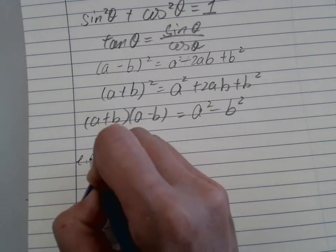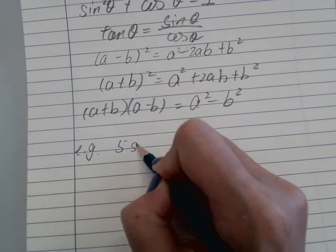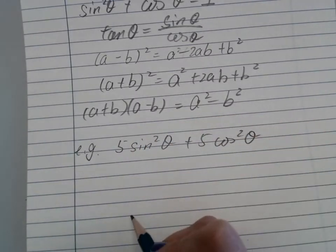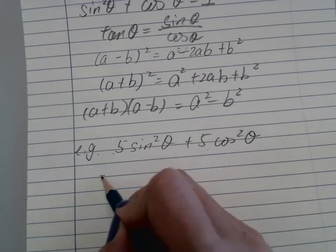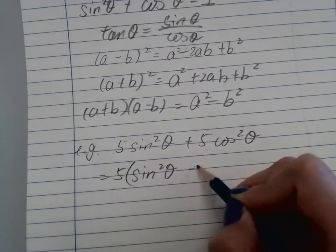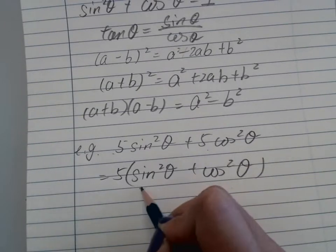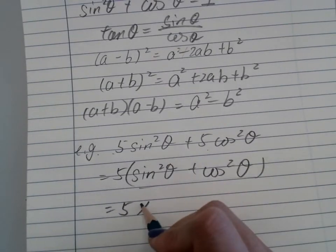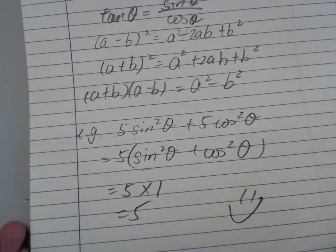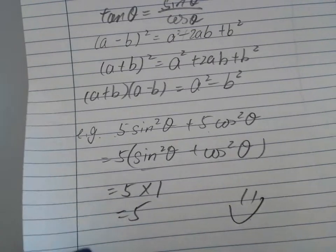Let's get started with an example. We have 5sin²θ + 5cos²θ. I can see a common factor there, so I'll take it out: 5(sin²θ + cos²θ). This equals 5(1) = 5. Nicely simplified. But what if we have a fraction?